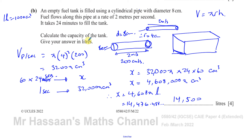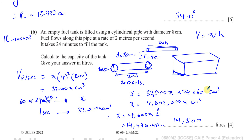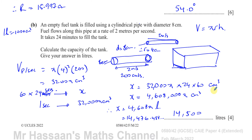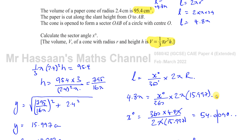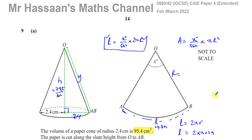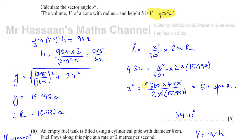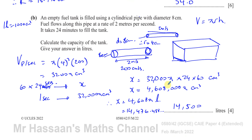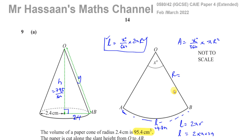That's the answer to question 9 part B — so A and B of question 9 are done, all about mensuration: areas, volumes, and their applications. Other questions from this paper can be found in the playlist. You can subscribe to the channel by clicking the link. Thank you for watching and see you soon.